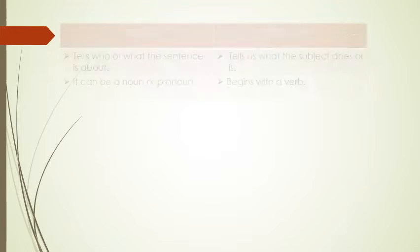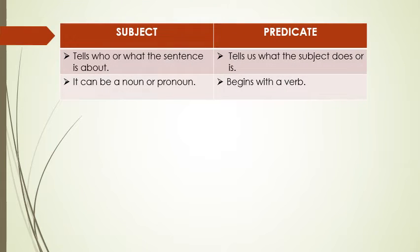Let's understand what is a subject and a predicate. A subject tells who or what the sentence is about. It can be a noun or pronoun. Whereas a predicate tells us what the subject does or is. It generally begins with a verb.